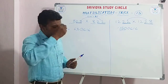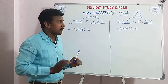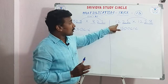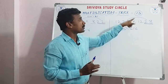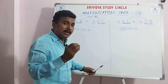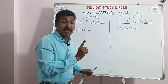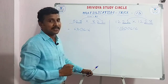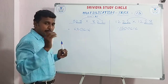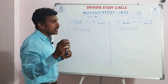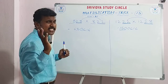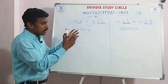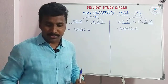This is trick number 13. Nobody can solve this problem as fast without this method. See 1224 into 1228 — can you solve it in 10 seconds? Our students can. You can watch the full playlist for all the number tricks. Within seconds, without pen and paper, you can calculate.